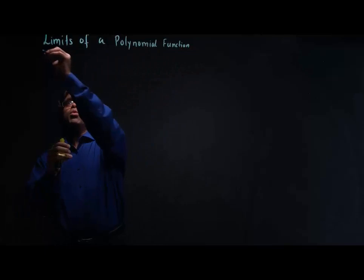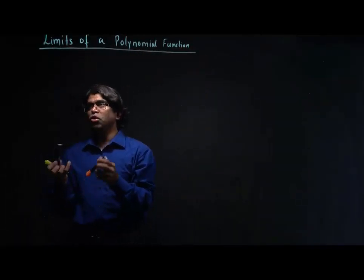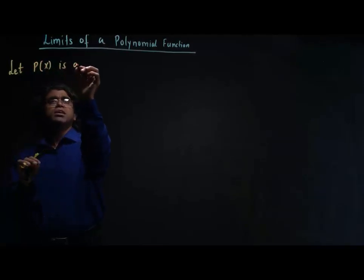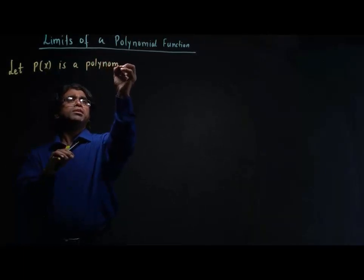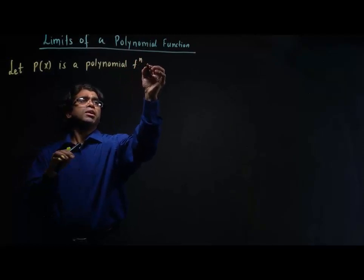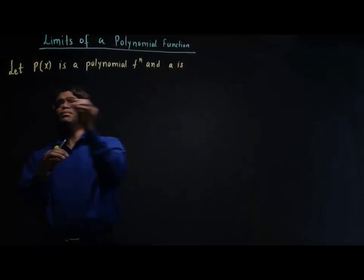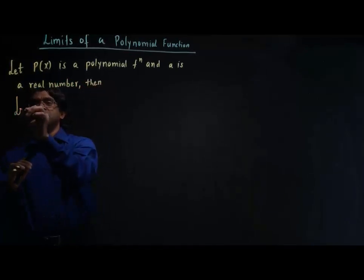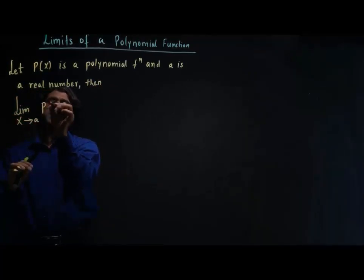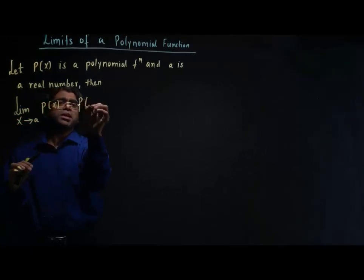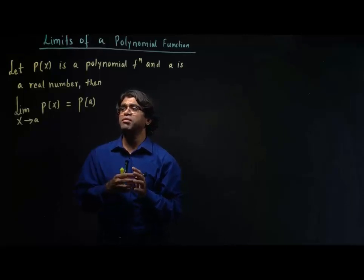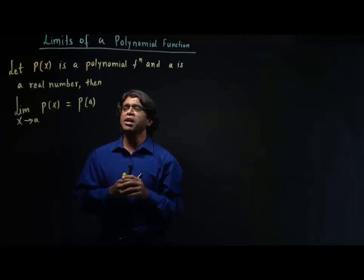What I'm going to do, I'm going to consider a polynomial function. Let p(x) be a polynomial function, and let 'a' be a real number. Then, the limit as x tends to a of p(x) is equal to p(a). This is the statement we can use to find the limit of a polynomial function.